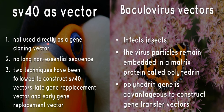SV40 is not used directly as a gene cloning vector. Non-essential sequences are removed, and two techniques have been followed to construct SV40 vectors: late gene replacement vector and early gene replacement vector.